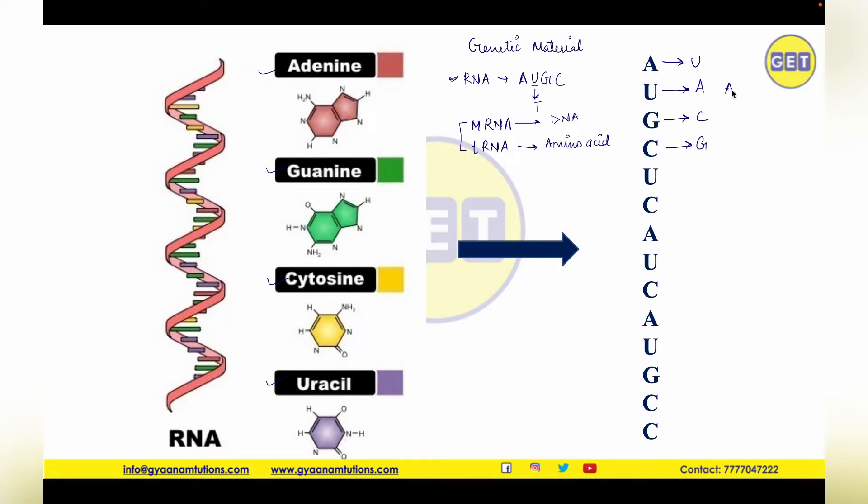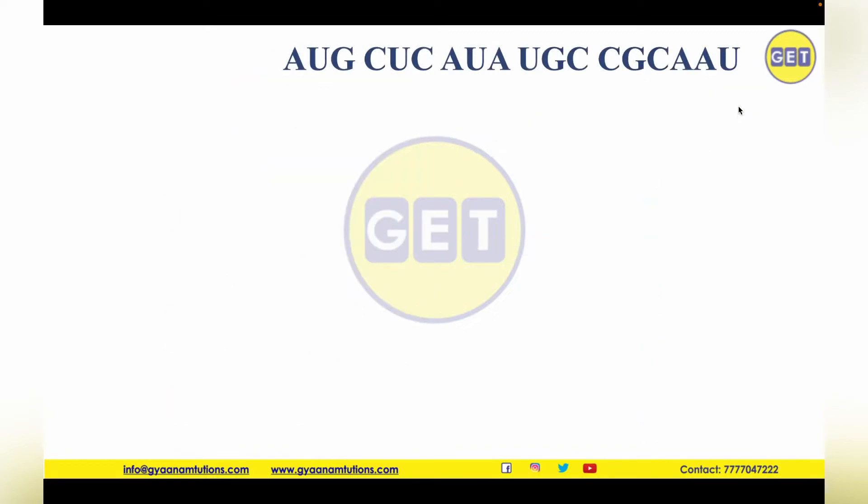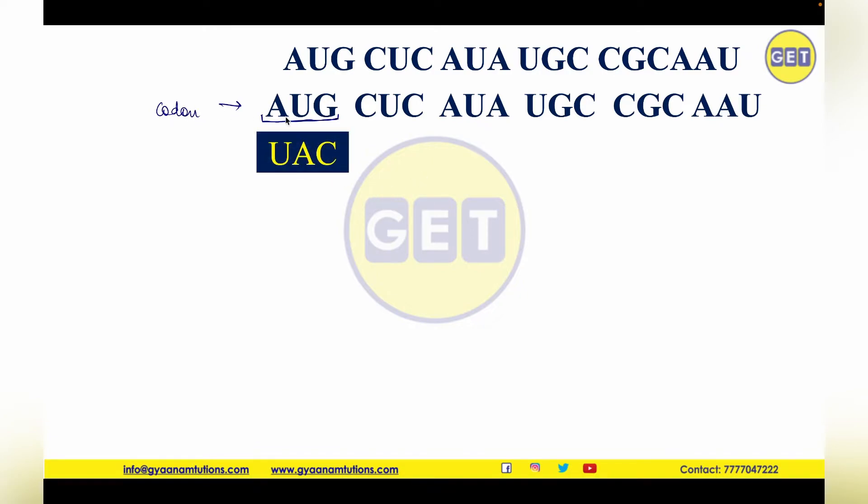Now if I talk about the codons, you can see in front of you there is a sequence of RNA. And if I join the three base pairs, or if I just group the three base pairs, this is simply known as codons. And it is going to have a complementary structure, and that is known as anticodons.